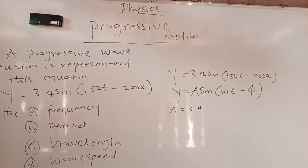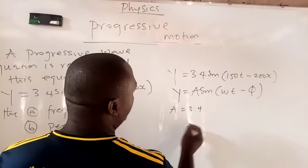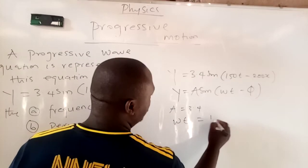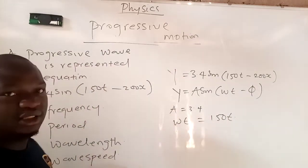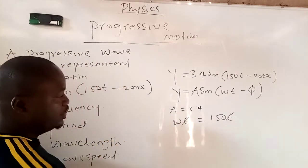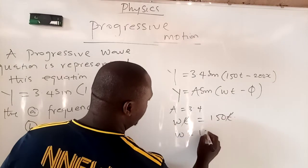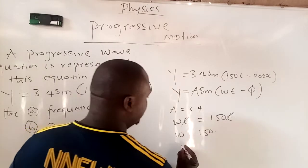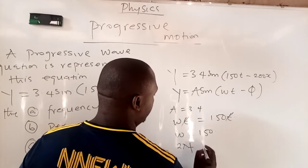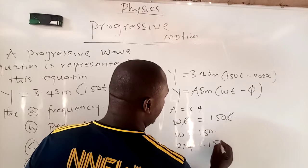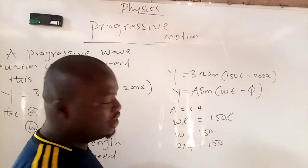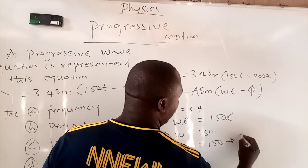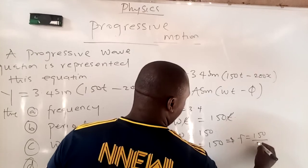They want you to calculate the frequency. How can you calculate the frequency? Compare it. Omega T equals 150T. This T will cancel this T. So you have angular frequency to be 150. From part 1 of the video, I told you that the angular frequency is 2πF. So you just equate it. 2πF equals 150. They ask you to calculate the frequency. From here, you make frequency the subject of the formula. So what you have is F equals 150 over 2π.